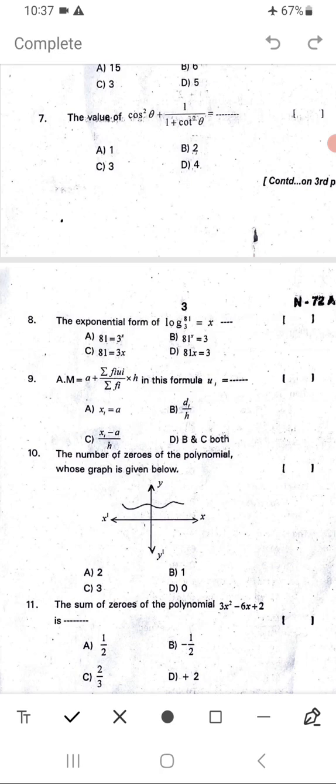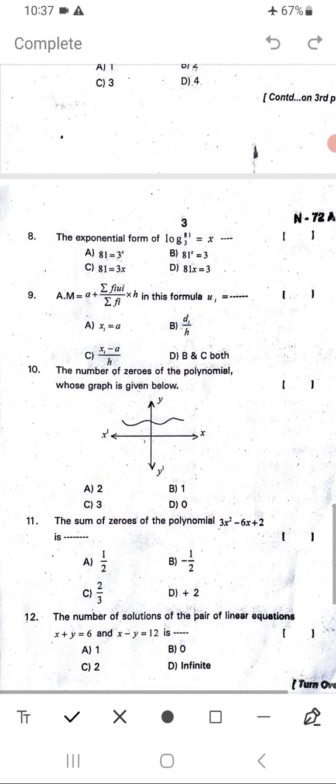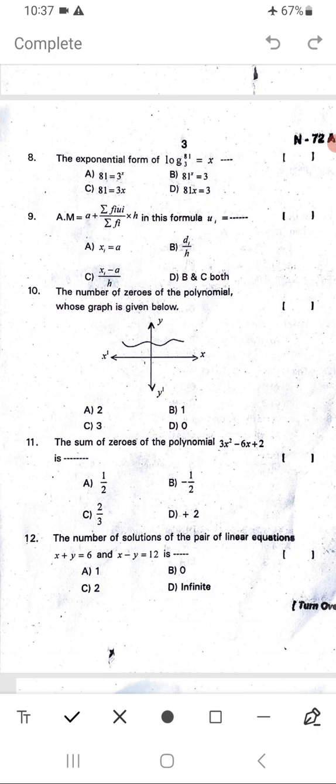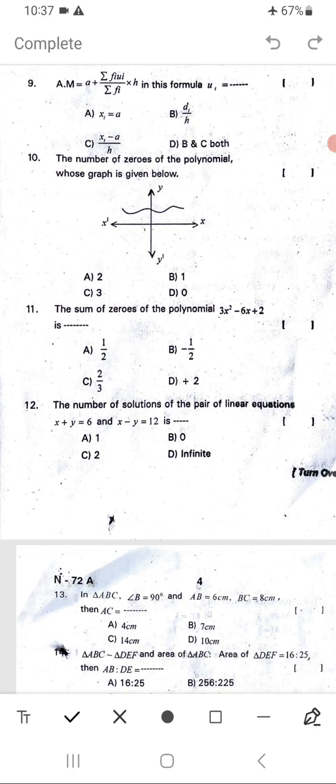Tenth question: The number of zeros of the polynomial whose graph is given below. Just by seeing the graph, we can write the number of zeros. Eleventh: The sum of zeros of polynomial 3x² - 6x + 2 is what? Twelfth: The number of solutions of x + y = 6 and x - y = 4.